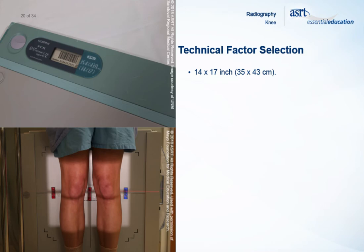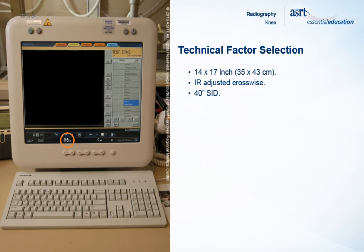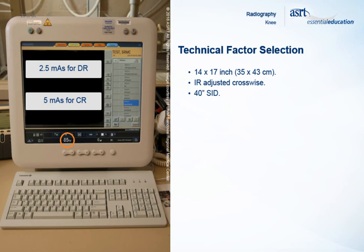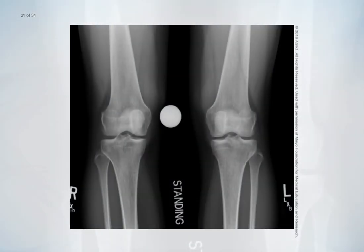A 14 by 17 inch or 35 by 43 cm image receptor is used for an AP weight-bearing projection of the knees and is adjusted crosswise. The SID is set at a minimum of 40 inches, although some departments may require a longer SID. Collimation is adjusted to 14 inches by 17 inches. 85 kVp is a common setting for an AP weight-bearing projection performed with a grid. Automatic exposure control may be used; however, common mAs settings are 2.5 mAs when using digital radiography and 5 mAs when using computed radiography. A small focal spot is selected. An AP weight-bearing projection of the knees shows the femoral tibial joint spaces and is also used to demonstrate varus and valgus deformities.